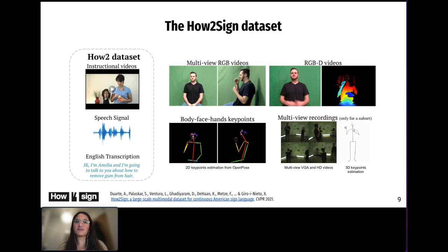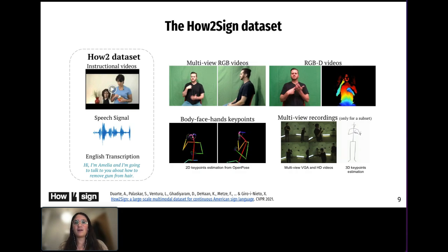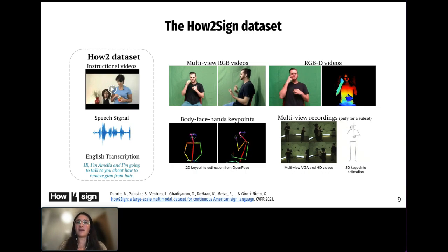HowToSign contains over 80 hours of instructional videos where videos and English transcriptions have been aligned. While this dataset has been explored for other tasks such as sign language video retrieval and sign language video generation, it has not been used for sign language translation.